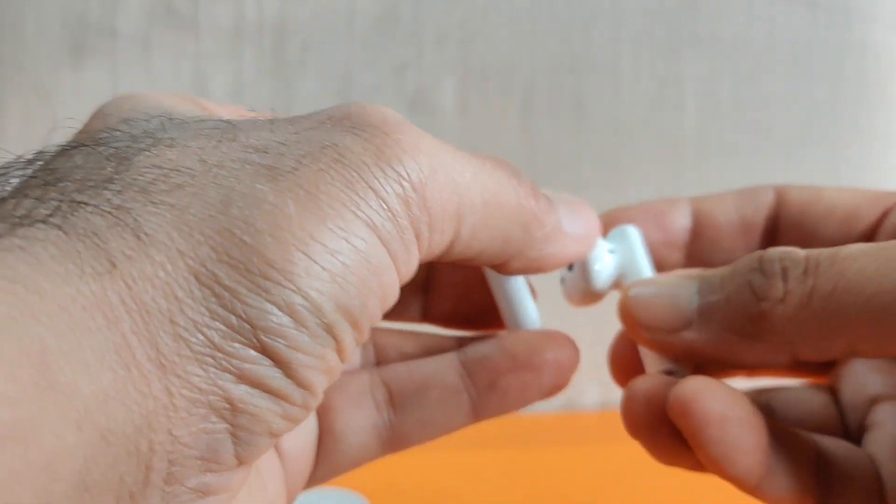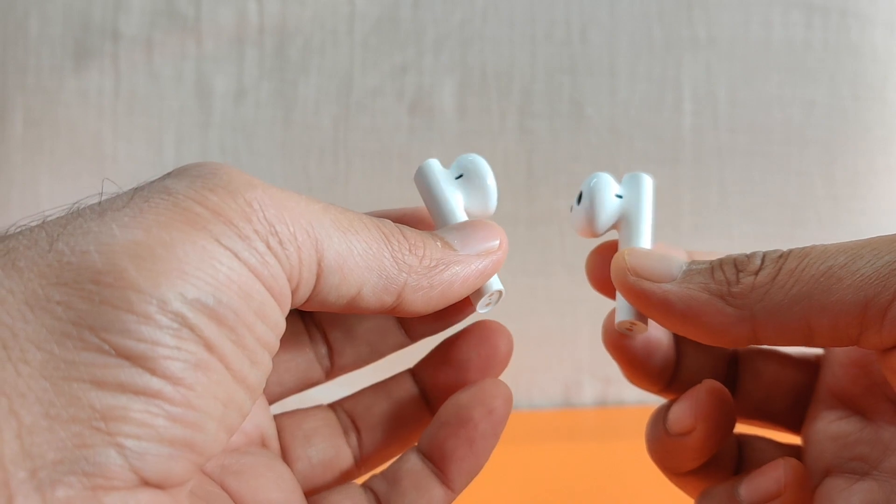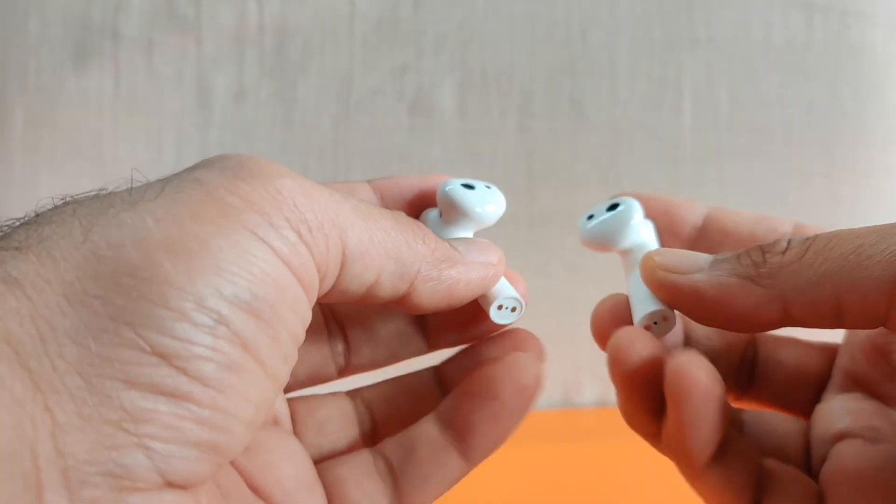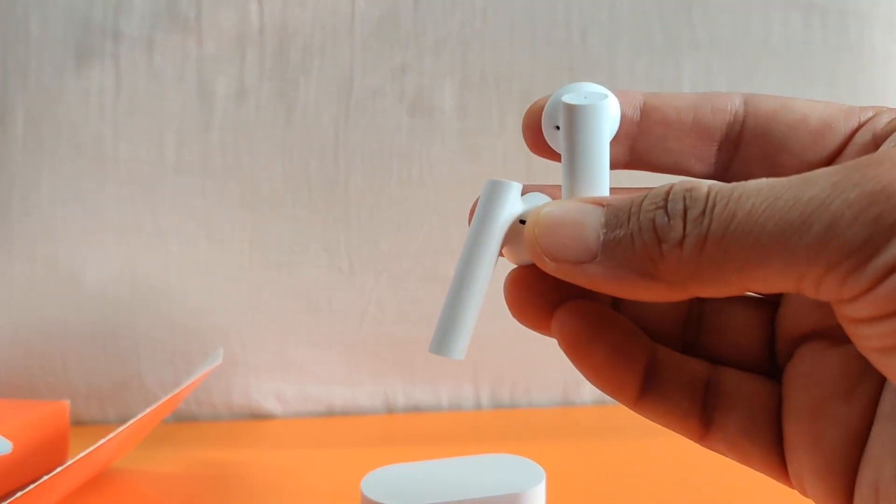And it needs multiple mics for the ambient noise cancellation to work. There is also this air hole at the back which is provided in most earphones for the air to easily pass and give you the bass effect that you would want. So without further ado let me just turn it on, pair it with my phone and get back with my impressions of the sound.